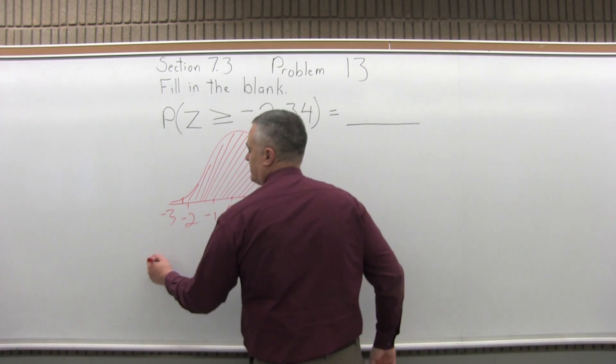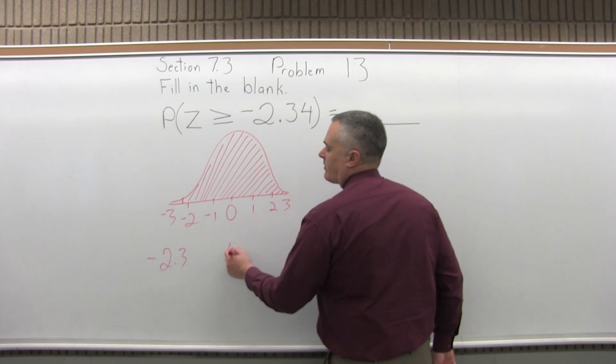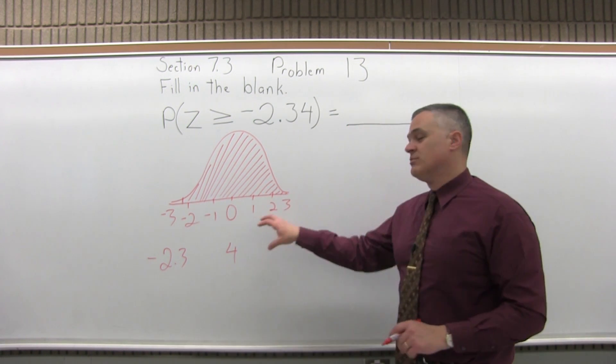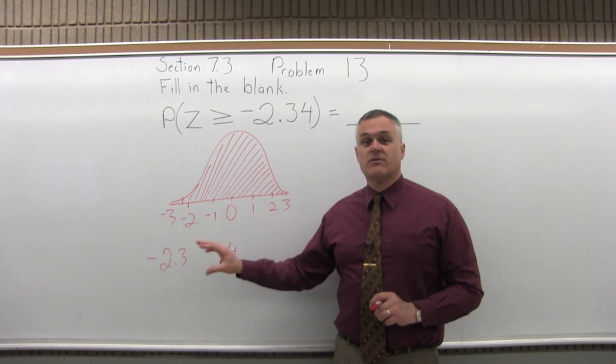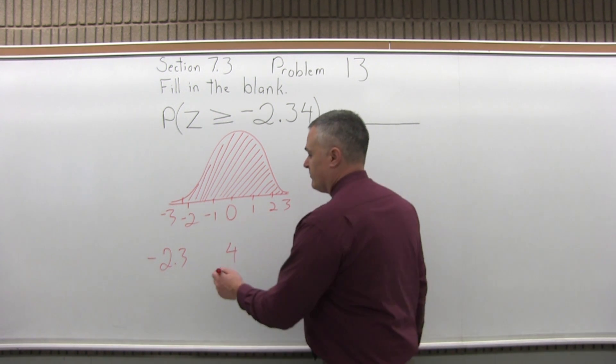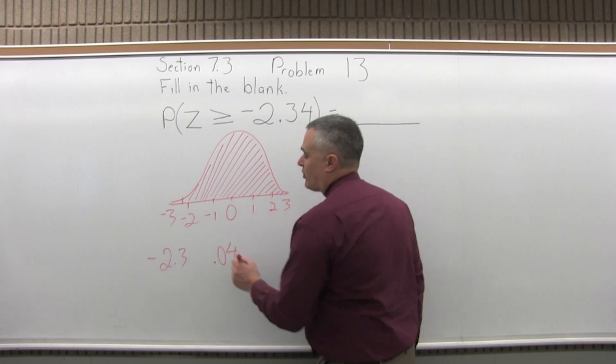Step 2 is split the number into two parts by pulling off the rightmost digit, which is the 4, so I pull it off to the side. Step 3: put a 0.0 in front of the rightmost digit that you pulled off. So that 4 gets written as 0.04.